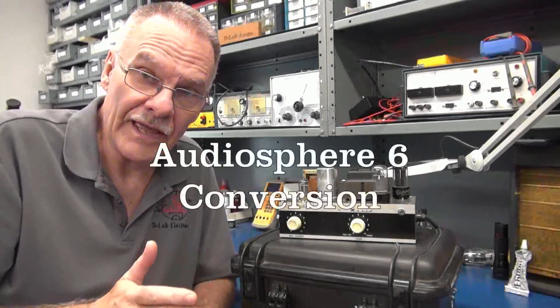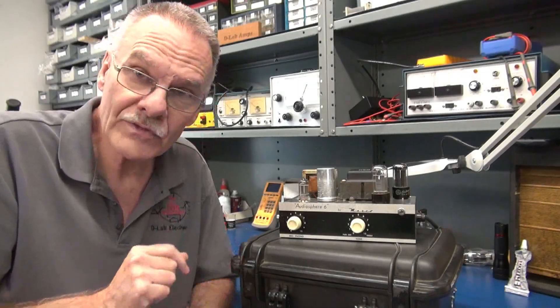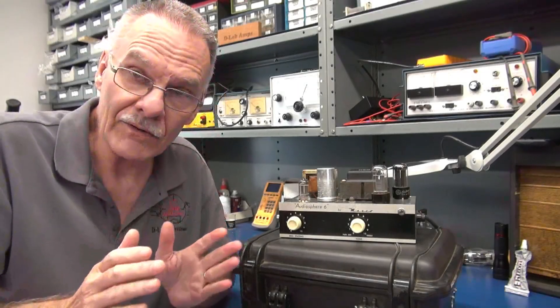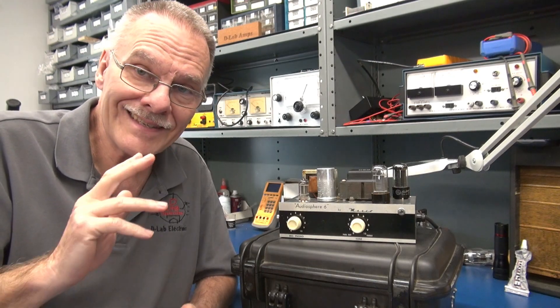Hey, this is Terry from D-Lab. On the bench today, I've got a cool little Masco amp. I've never seen this model. It's called the Audiosphere 6.